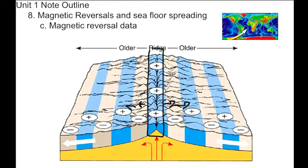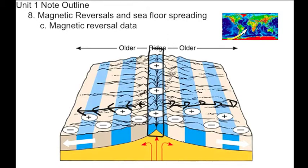If you go further out along each side, you see positive polarity again, then negative, then positive — creating a repeating alternating pattern. That pattern does not scream random at all; it screams orderly and logical. There must be something going on here. The formation of these rocks must be occurring in such a manner that rocks are being created at the ridges and then getting pushed away from that central ridge.